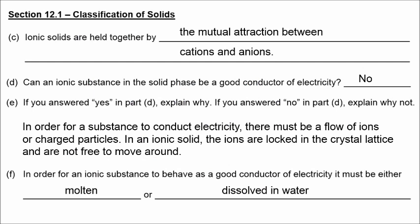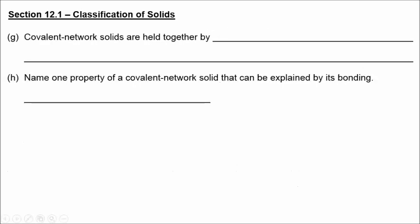So the answer to letter D is no, and the reason why in letter E is because in order for a substance to conduct electricity, there must be a flow of ions or charged particles. The reason why metals are good conductors is because the loosely held electrons are flowing throughout the metal. But in an ionic solid, the ions are locked in the crystal lattice and are not free to move around. Letter F, in order for an ionic substance to behave as a good conductor of electricity, it must be either molten or dissolved in water.